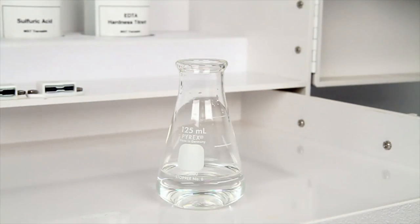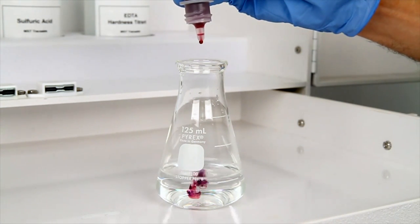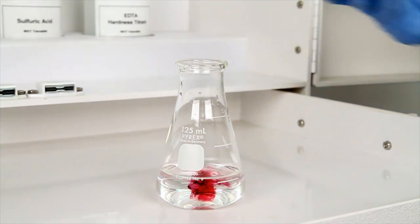Next, add 7 drops of hardness indicator solution. Remember to hold the bottle vertically and swirl after the addition of each reagent.